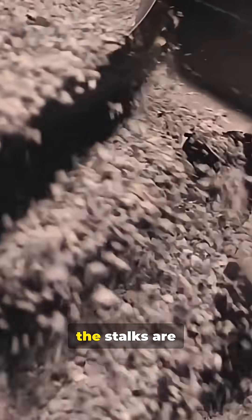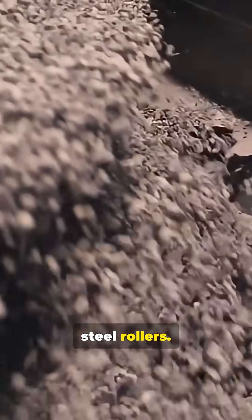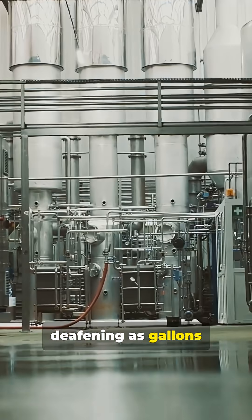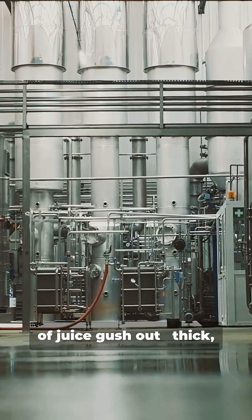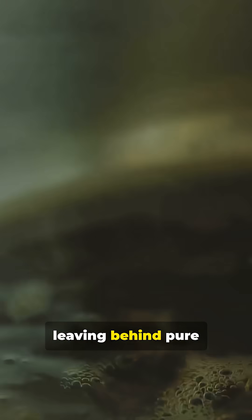At the factory, the stalks are shredded by giant steel rollers. The sound is deafening as gallons of juice gush out, thick, green, and foamy. That liquid is filtered and boiled to drive out impurities, leaving behind pure, golden syrup.